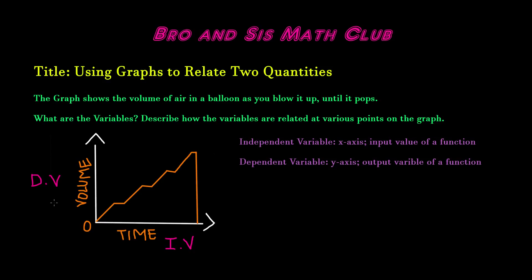So as far as independent variable and dependent variable go, what this is really saying is that the volume, which is the dependent variable, depends upon the time. So the volume will increase or decrease upon how long you're blowing into the balloon, how long you're pausing, and when it pops.